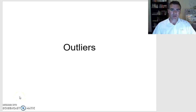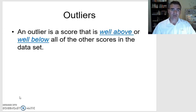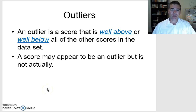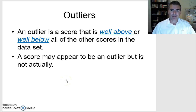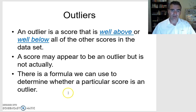In this lesson we're going to have a quick look at how we determine whether a score is an outlier or not. We need to know what an outlier is — it's a score that is either well above or well below all the other scores in the data set. So a score may appear to be an outlier, it might be much lower or much higher than the rest of the data set, but it may not actually be an outlier. So how do we actually determine whether a score is an outlier or not?